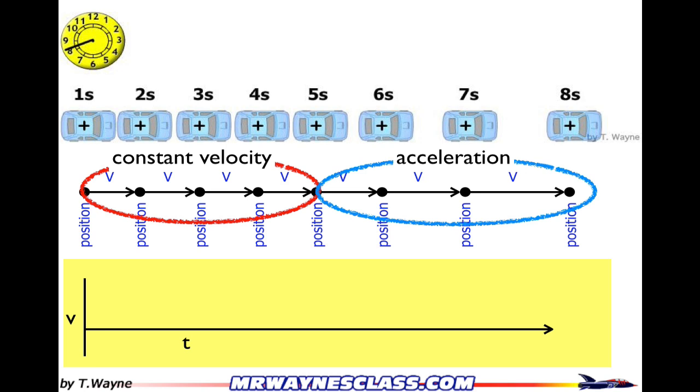So velocity versus time graph, this motion diagram has two pieces, a constant piece and an accelerated piece. So on a velocity diagram, if it's a constant velocity, that means if I read the y-axis, it's the same value at every moment in time. So that's just a horizontal line, and that's the constant velocity.